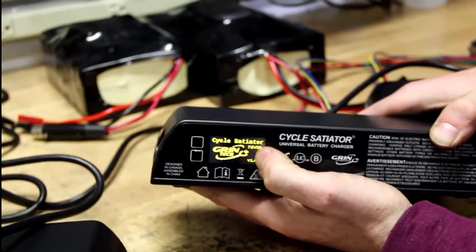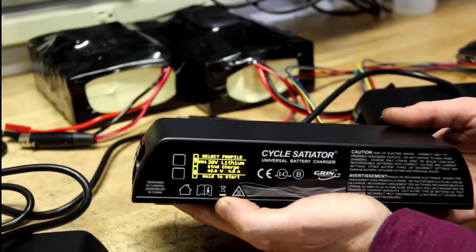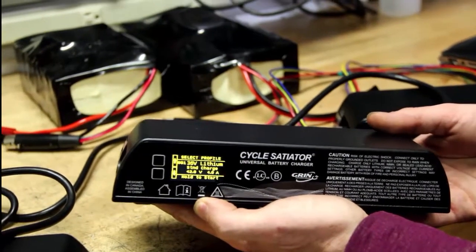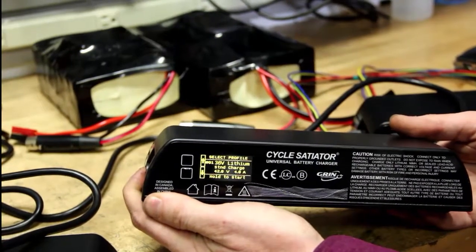You notice on the boot screen it says 72 volt 5 amps in the top left corner. So this is an example of our nominal 72 volt satiator with a full charge output maximum of 103 volts. That allows it to work with up to 24 series lithium battery packs.